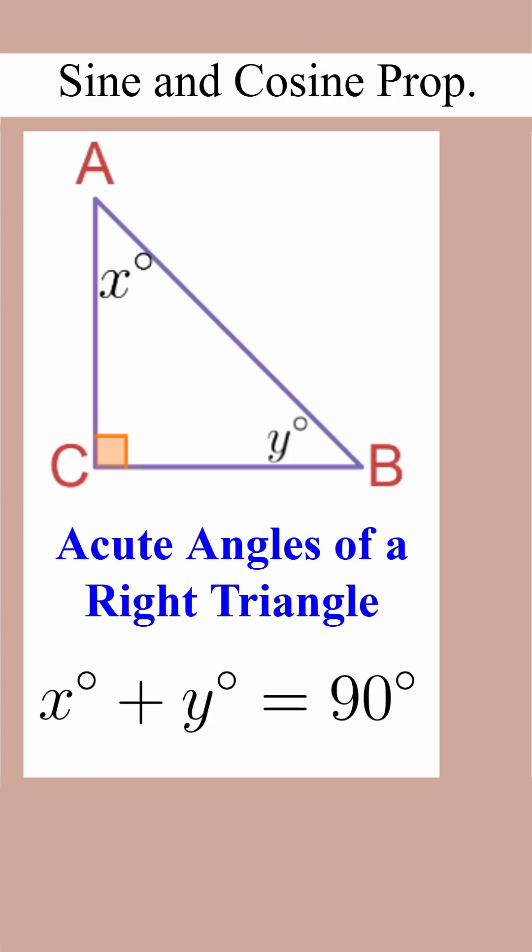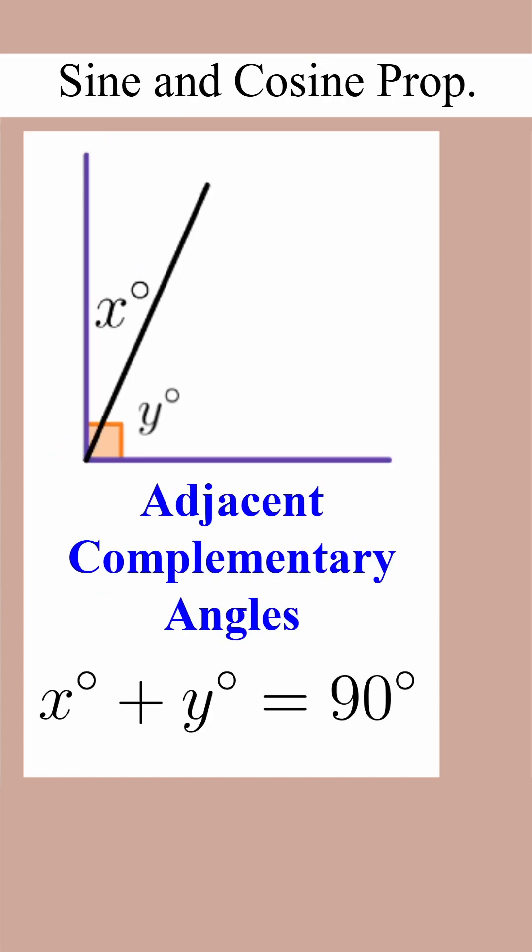The acute angles of a right triangle add to 90 degrees. Adjacent complementary angles also add to 90 degrees.